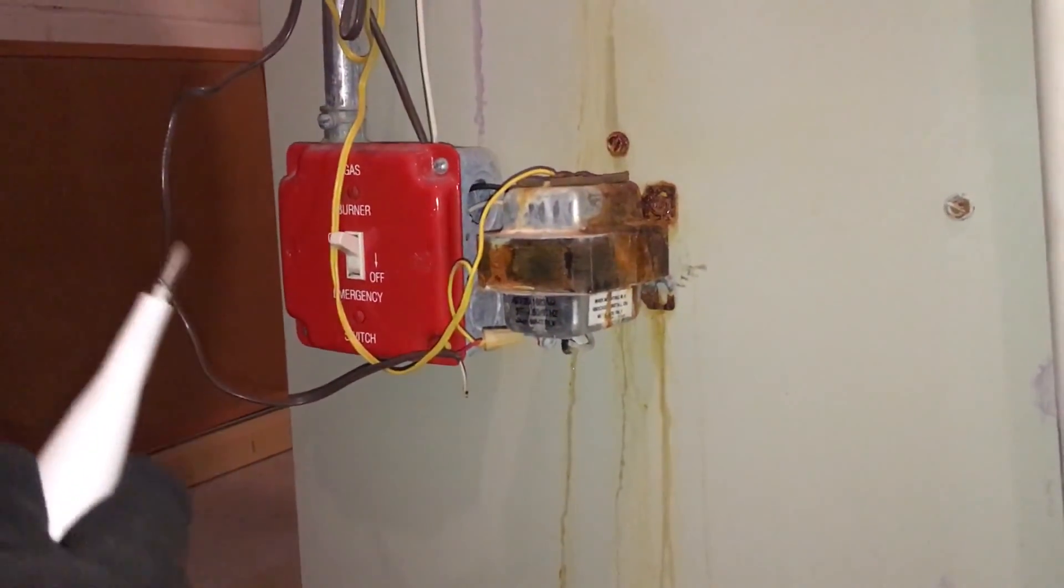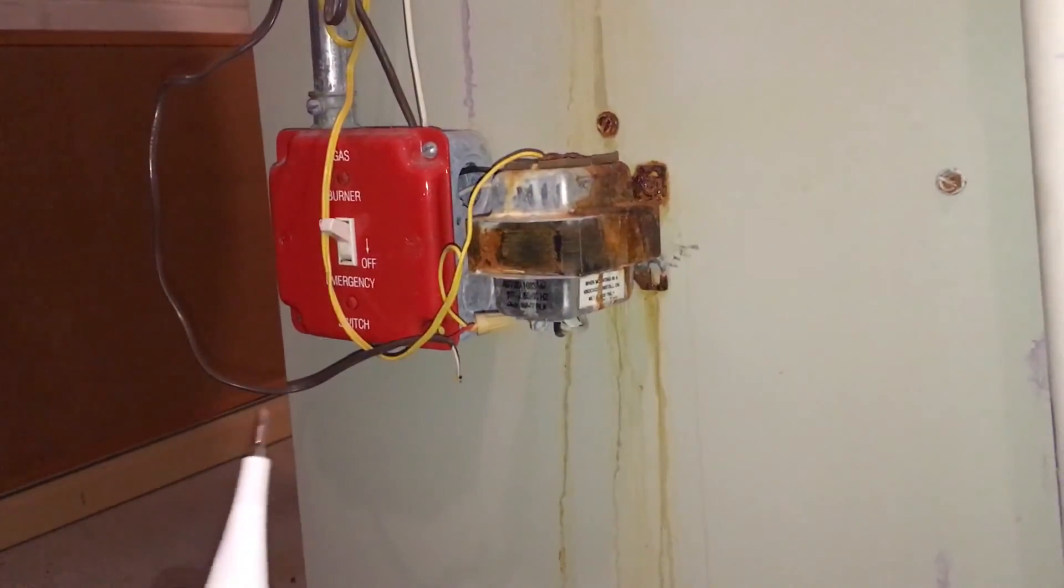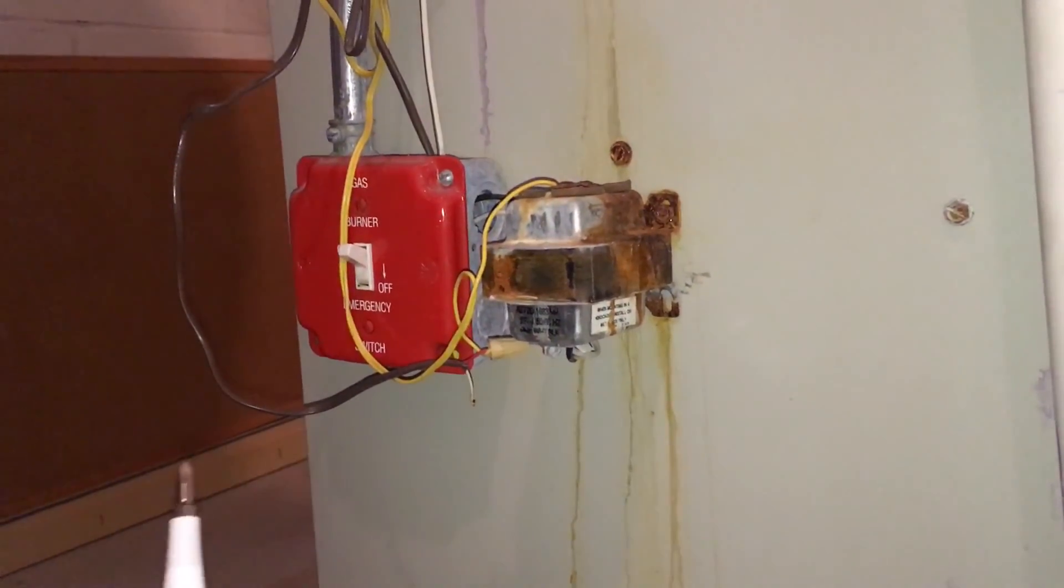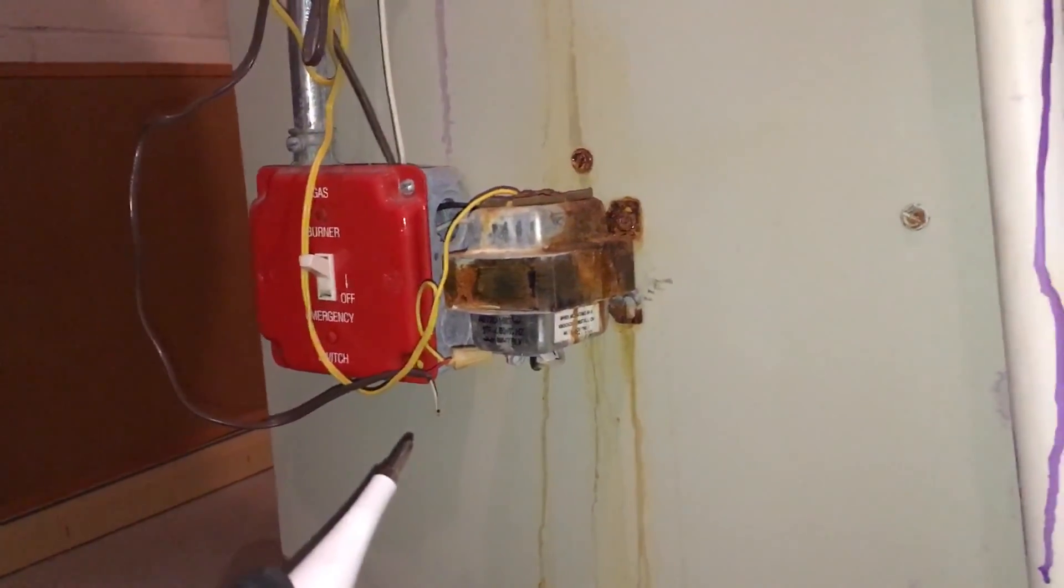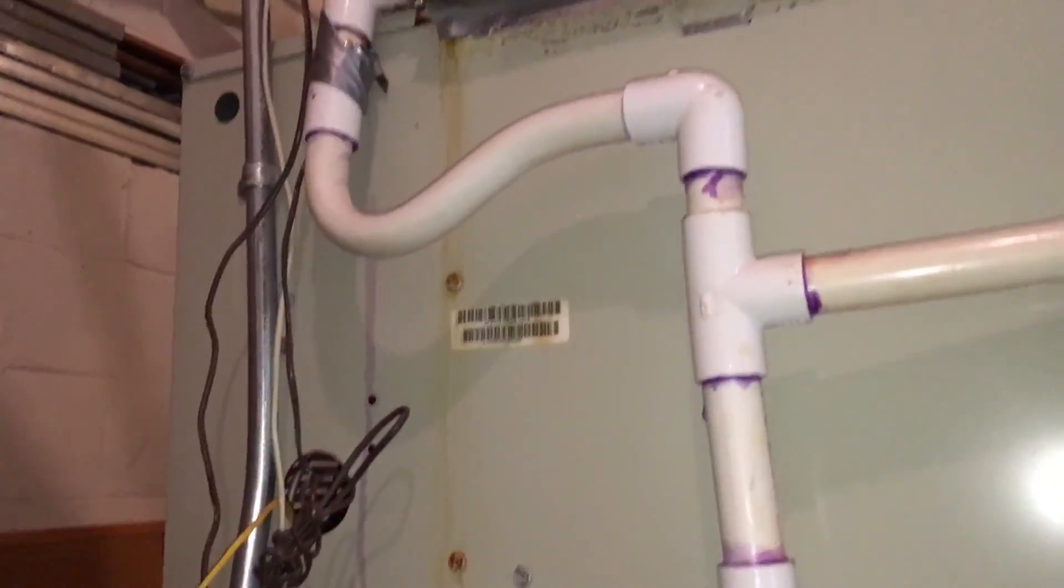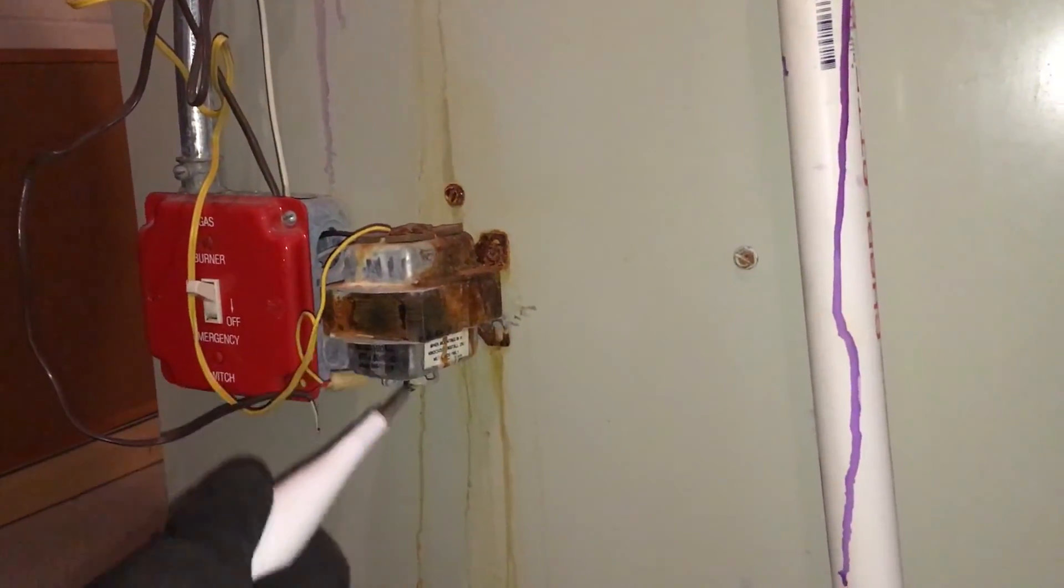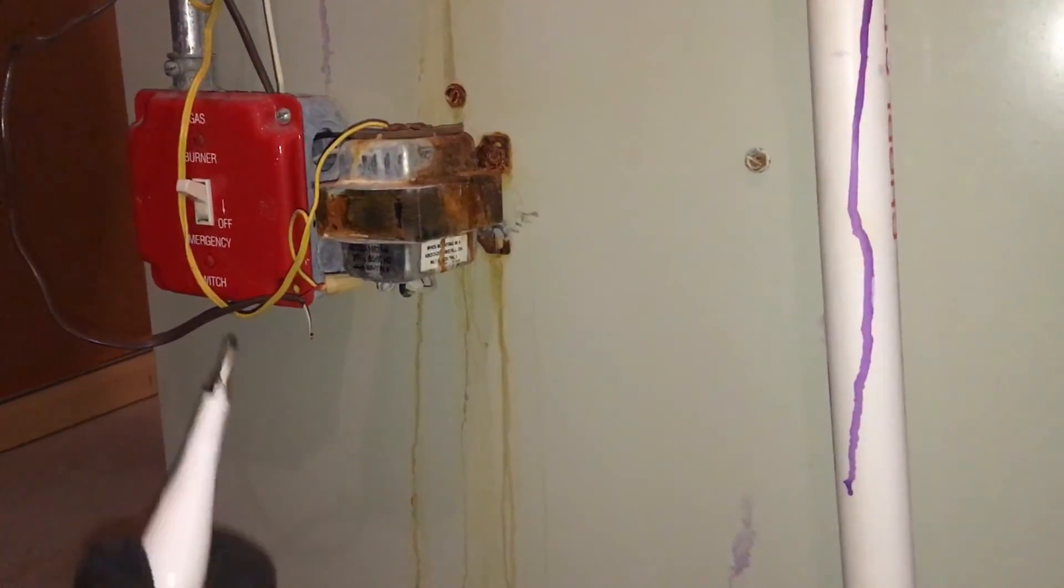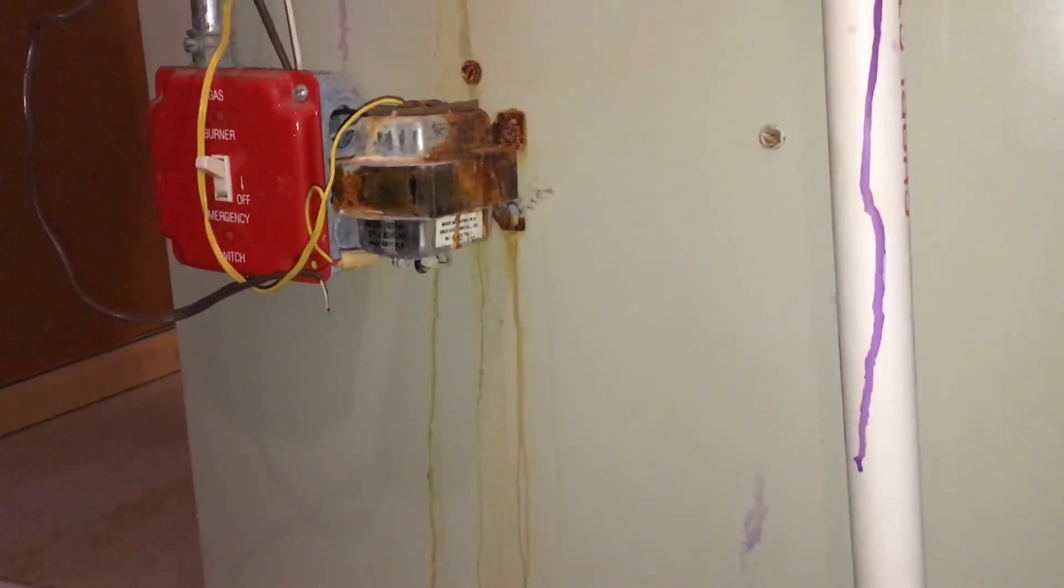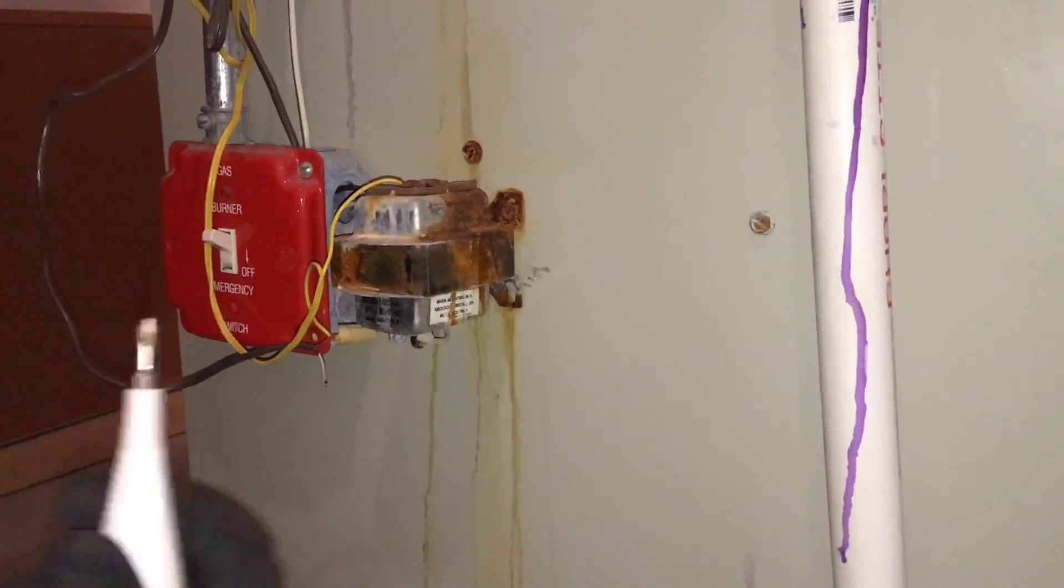Today's project is to replace the existing step-down transformer of our air conditioning system. This transformer has gone bad because some water started dripping out from the humidifier and it dropped literally on the transformer. I'm going to replace the existing transformer, but it is not only for this transformer—for any other transformer also the steps are more or less the same.